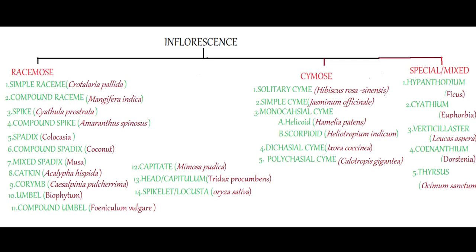Racemose inflorescence means the inflorescence axis grows indefinitely. It never terminates in a flower bud and the flowers are arranged in acropetal succession. Whereas in cymose inflorescence, the axis never grows indefinitely — it has only limited or determinate growth which ends in a flower bud. Hence further growth occurs with the help of lateral buds, and flowers are arranged in basipetal succession. In mixed or special inflorescence, we cannot treat it as racemose or cymose. They are a mixture of both, or some specialized structures can also be found.